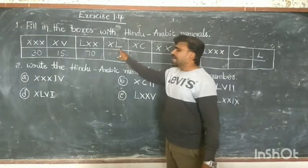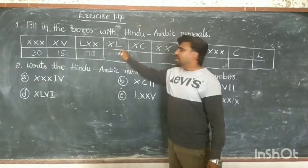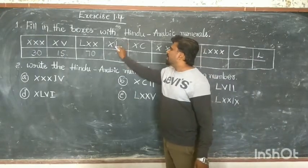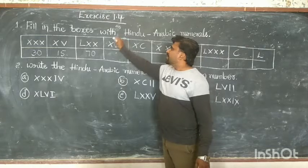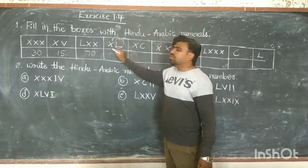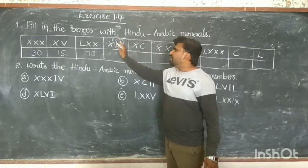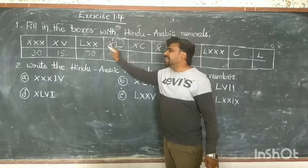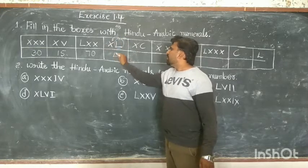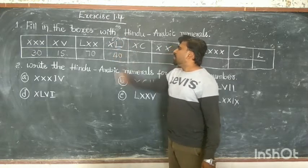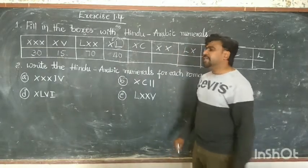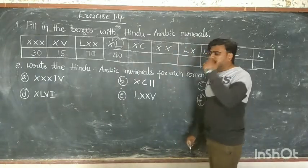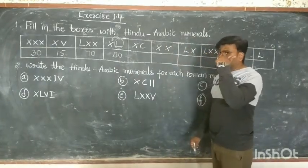Next: XL. You already know that L means 50. When it is reversed — X before L — you have to subtract. 50 minus 10 equals 40. So XL means 40.